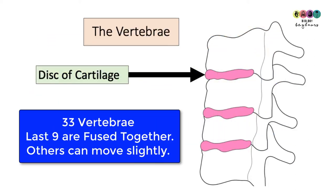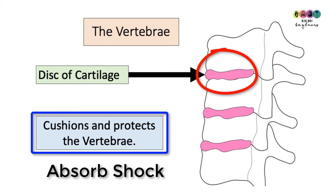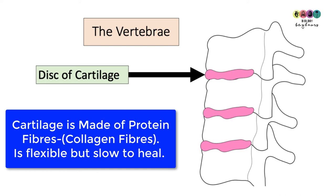The vertebral column is made up of those 33 vertebrae, but the last nine are fused together and can't move. The others can move slightly and there's a gap between them filled with a disc of cartilage. Cartilage cushions and absorbs shock. Back problems are generally because the cartilage discs have become torn or damaged. Cartilage is a connective tissue made up of collagen fibres and it doesn't have a direct blood supply, which is why it's slow to heal.